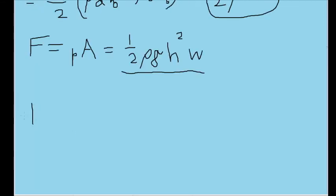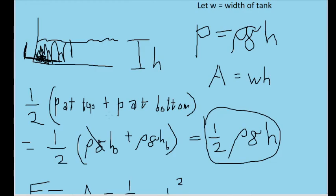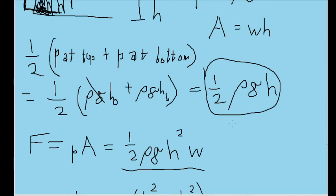So we could write this as delta F is equal to one half rho GW times HF, I'll say that's the deepest point in the water, the highest depth of water, minus H sub I squared, which is at its lower point of depth when it's two meters.